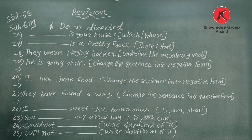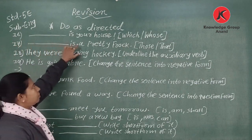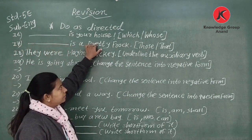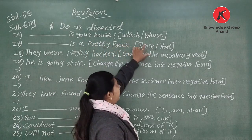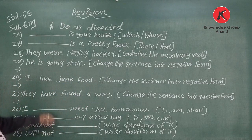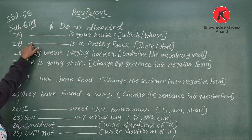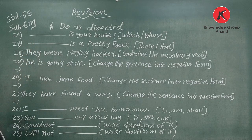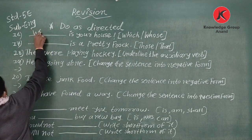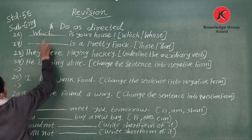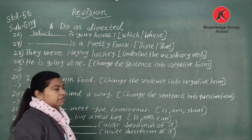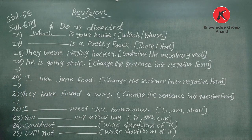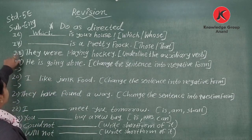Number sixteen: '___ is your house?' Bracket says 'which' and 'whose.' The suitable answer is 'whose' — W-H-O-S-E — because 'whose is your house' means ownership. So the answer is 'whose is your house.'